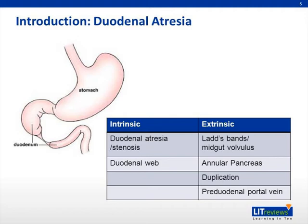Atresias occur in various anatomic configurations, including a blind end pouch with no connection to the distal duodenum, which is the least common; a pouch with a fibrous cord connected to the distal duodenum; or a complete membrane obstructing the lumen, which is the most common. Perforate membranes are also a cause of duodenal stenosis. All three lesions occur with greatest frequency near the ampulla of Vater, with most lesions — about 80% — occurring distal to this landmark.